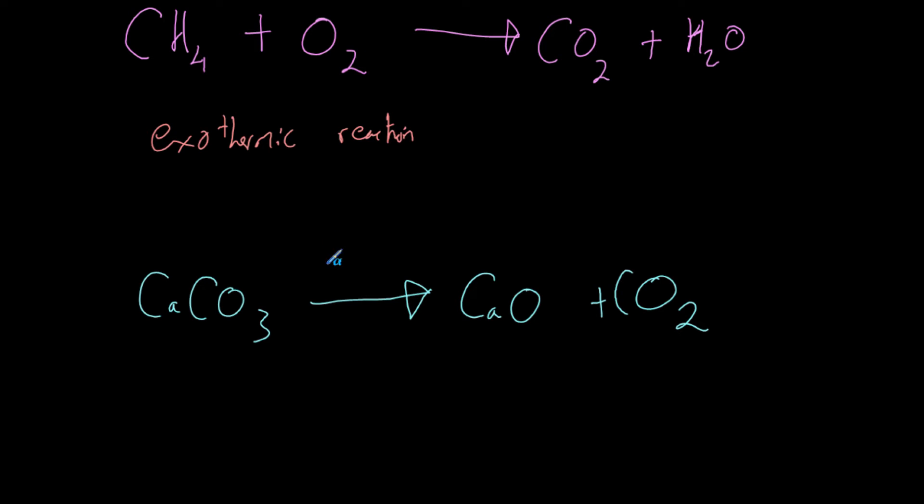This is a thermal decomposition. We are heating this up - remember heat is not a chemical so we put it here - heating it up and we are going to form calcium oxide and carbon dioxide. So why isn't this exothermic if we're adding heat here? Well, the reason we add heat in this case is to persuade calcium carbonate to break down. When it does break down, the temperature will go down.